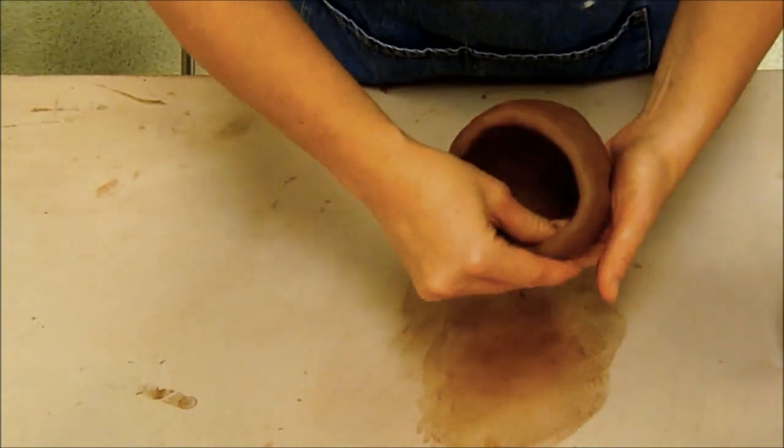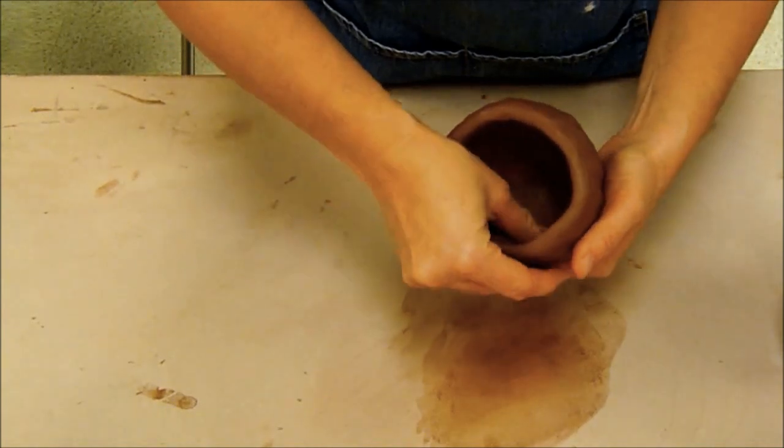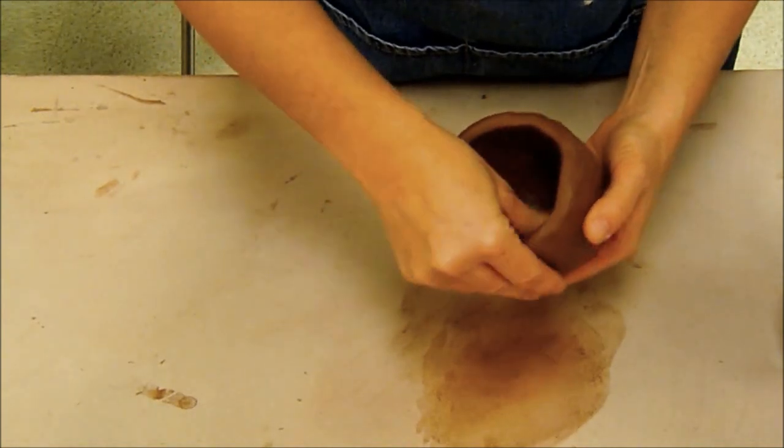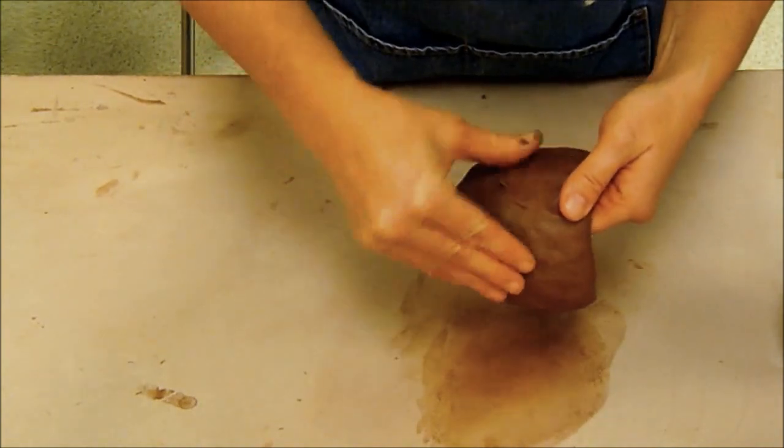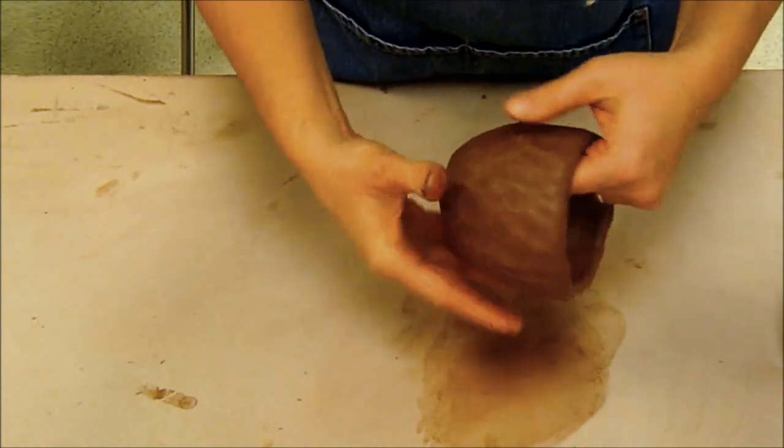If you start to see any creasing you immediately take your finger and blend side to side across any creases. If you see creases on the outside you also blend side to side and blend across the creases.